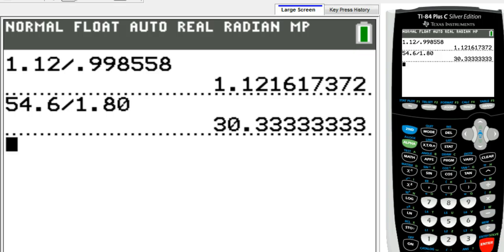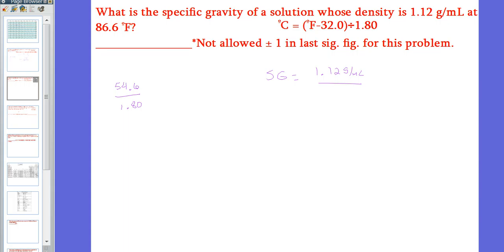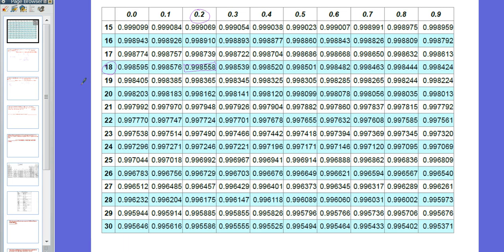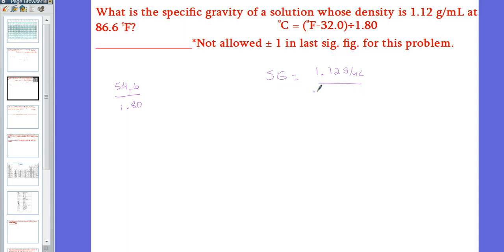So then we're going to use that temperature to go back to our chart here, 30.3 degrees Celsius, right there. So now we're using 0.99555 for the density of water at that temperature. So 0.99555 grams per milliliter will go on the bottom right there.